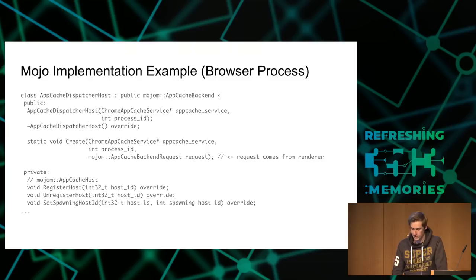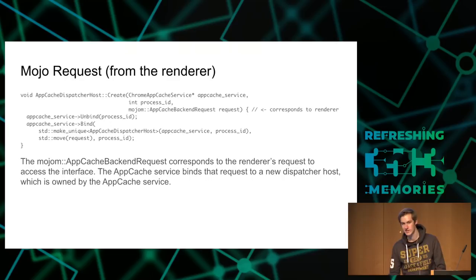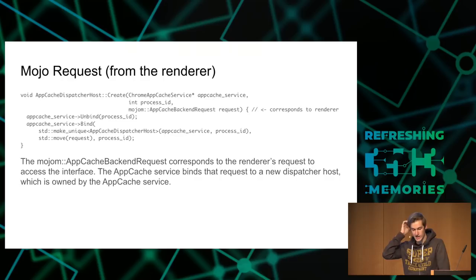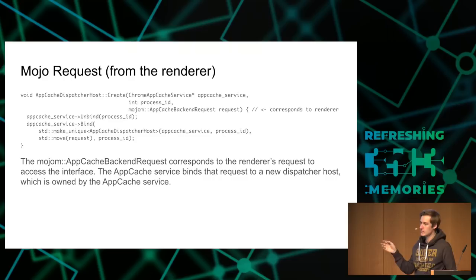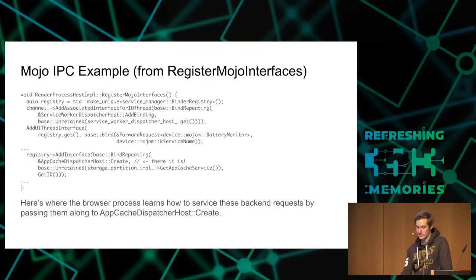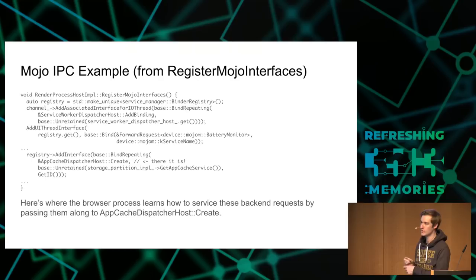The app cache was one of the bugs I found this year. Here's the API that the renderer can use — all the messages the renderer can send to the browser along with the types of the arguments. In the browser process, this is the code we're trying to attack — the actual C++ implementation code for this API. They subclass it and override all the virtual functions that implement the API. The renderer reaches this browser C++ code through a request mechanism where the renderer tells the browser process it wants to access an interface, and then it creates that dispatcher host implementation object. All this gets exposed through the register Mojo interfaces function.